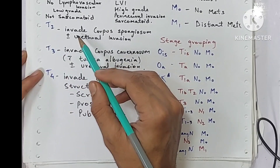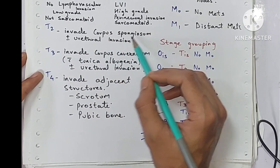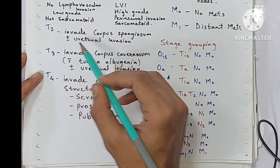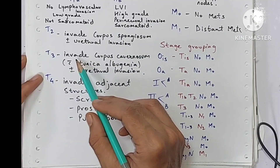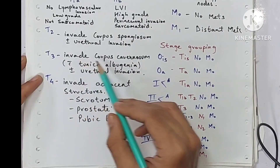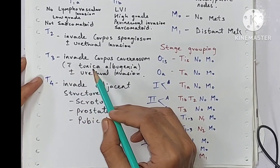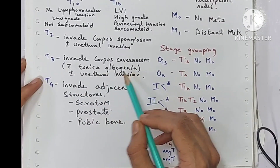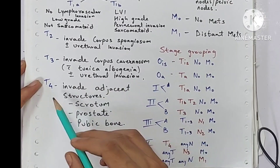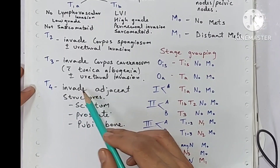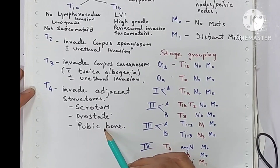T2 is when there is invasion of corpus spongiosum with or without urethral invasion. T3 is when it invades corpus cavernosum with involvement of tunica albuginea, with or without urethral invasion. T4 is when it invades adjacent structures like scrotum, prostate, or pubic bone.